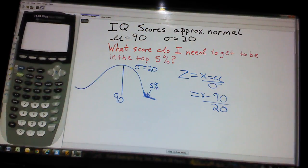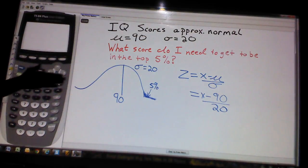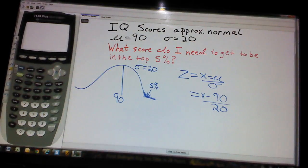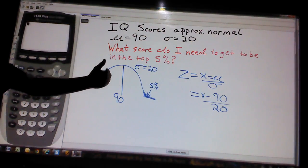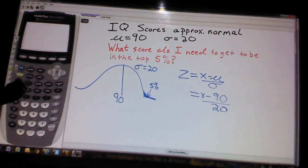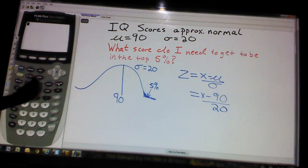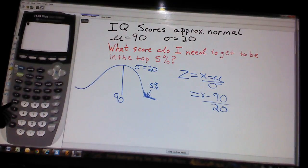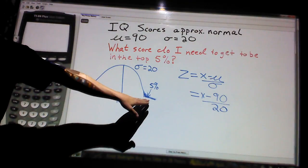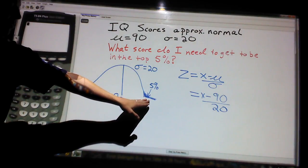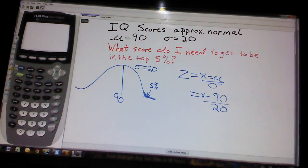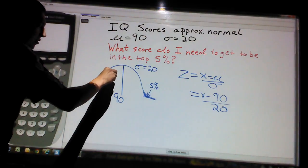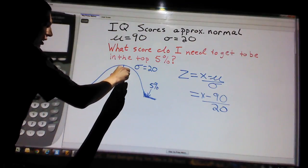So I'm going to have to use my calculator to get z. Our calculator, though, does not do top 5%, it does the bottom percents. It does the percentile. What is the percent to the left? What is the area to the left? The area to the left is not 5%. If that's 5%, then the area or the percent to the left must be 95%.